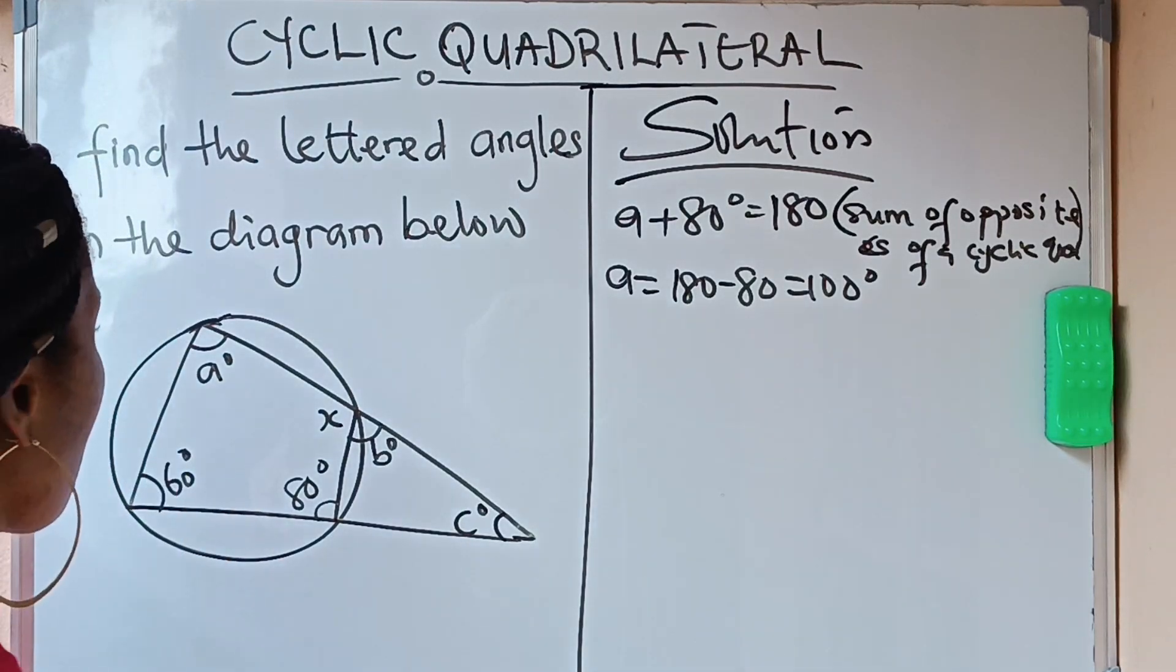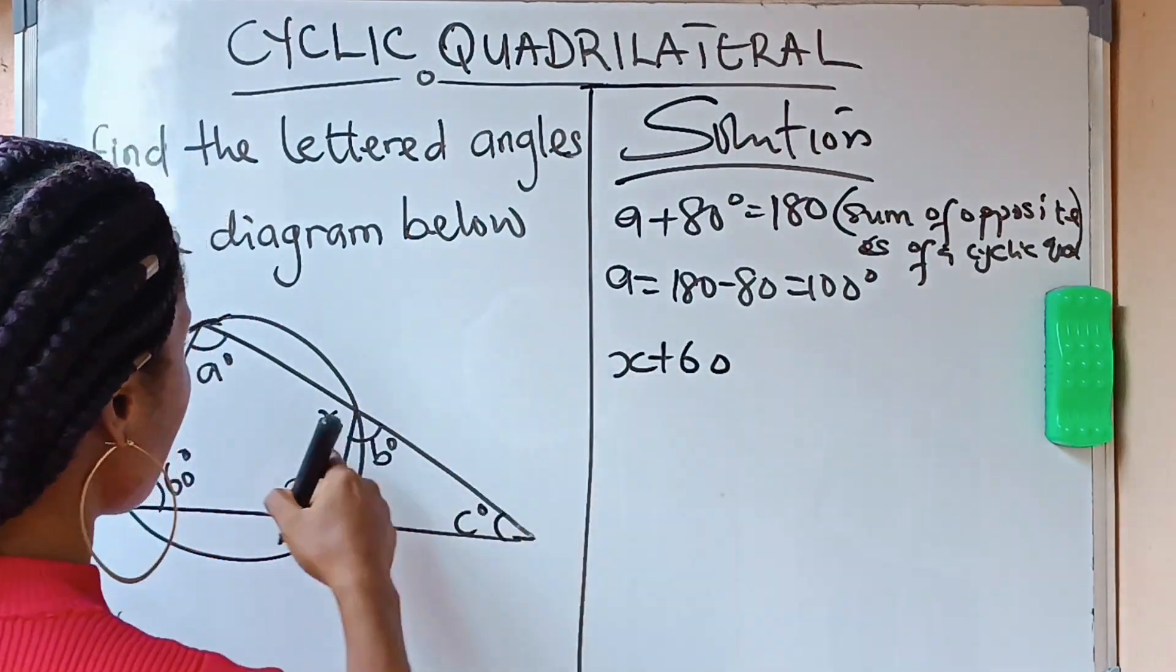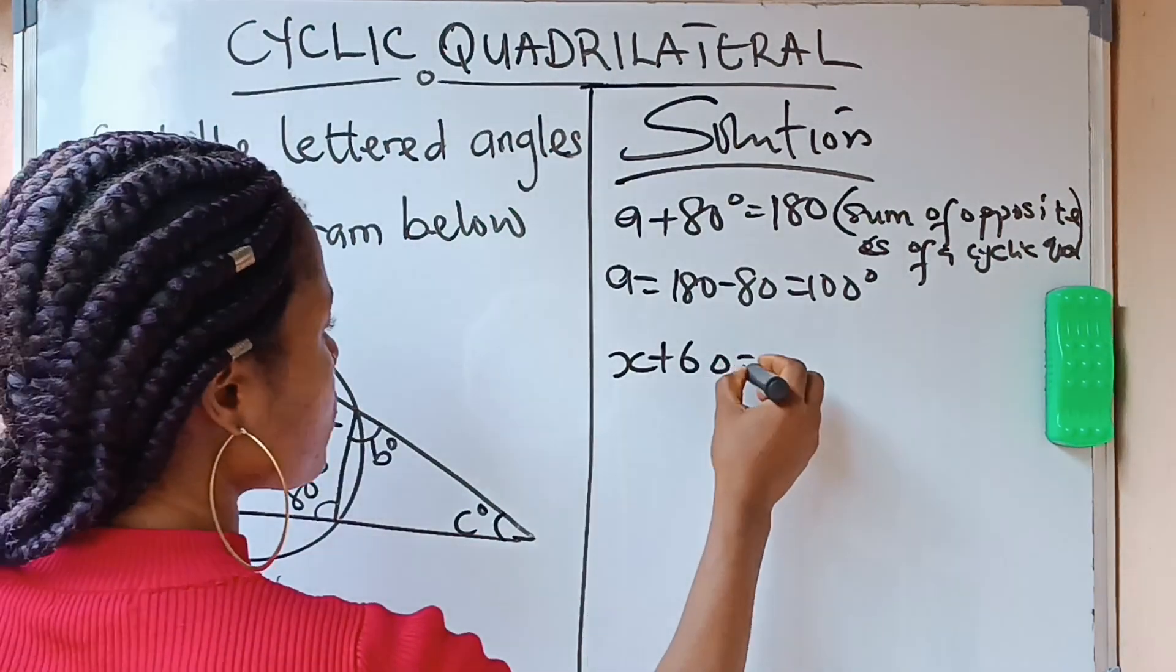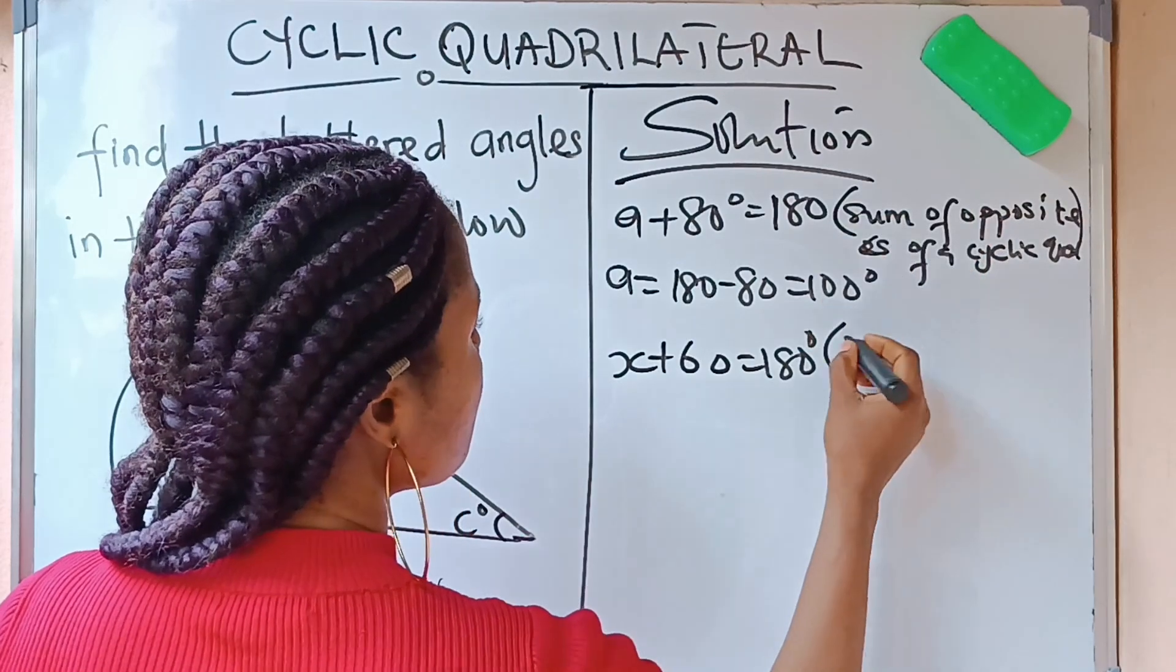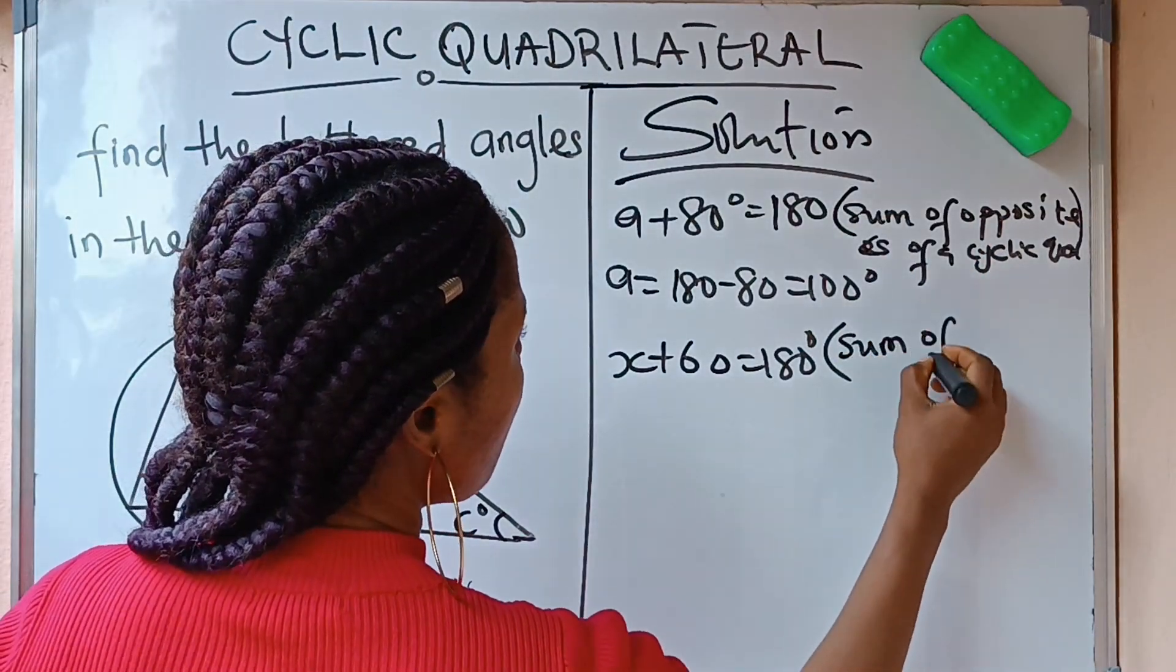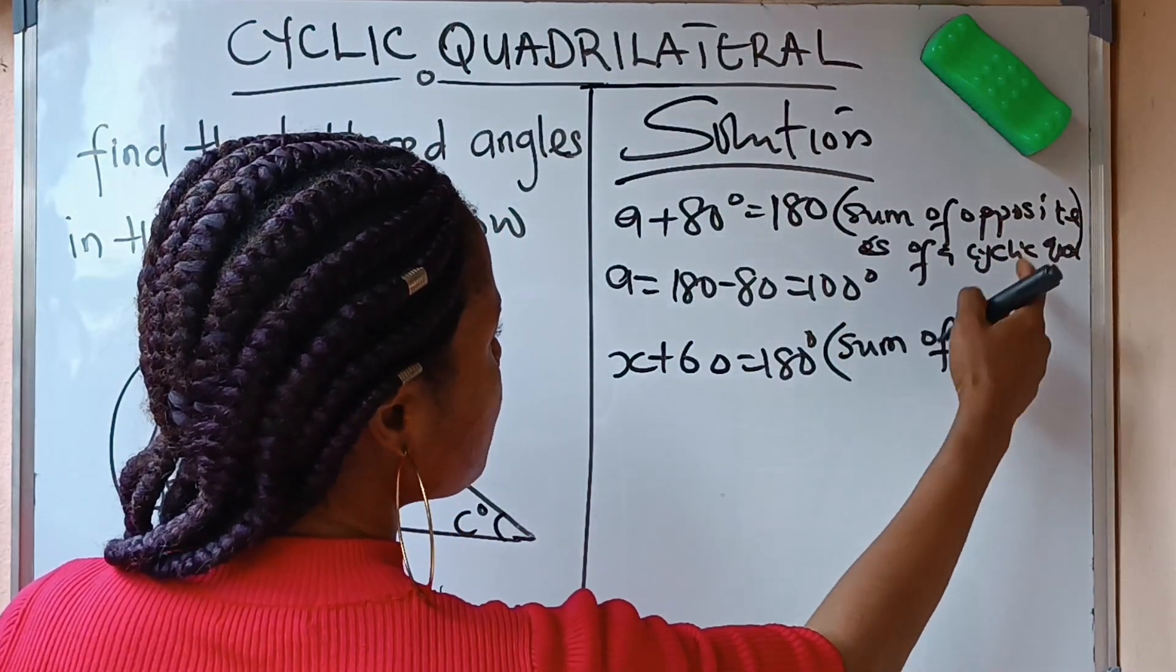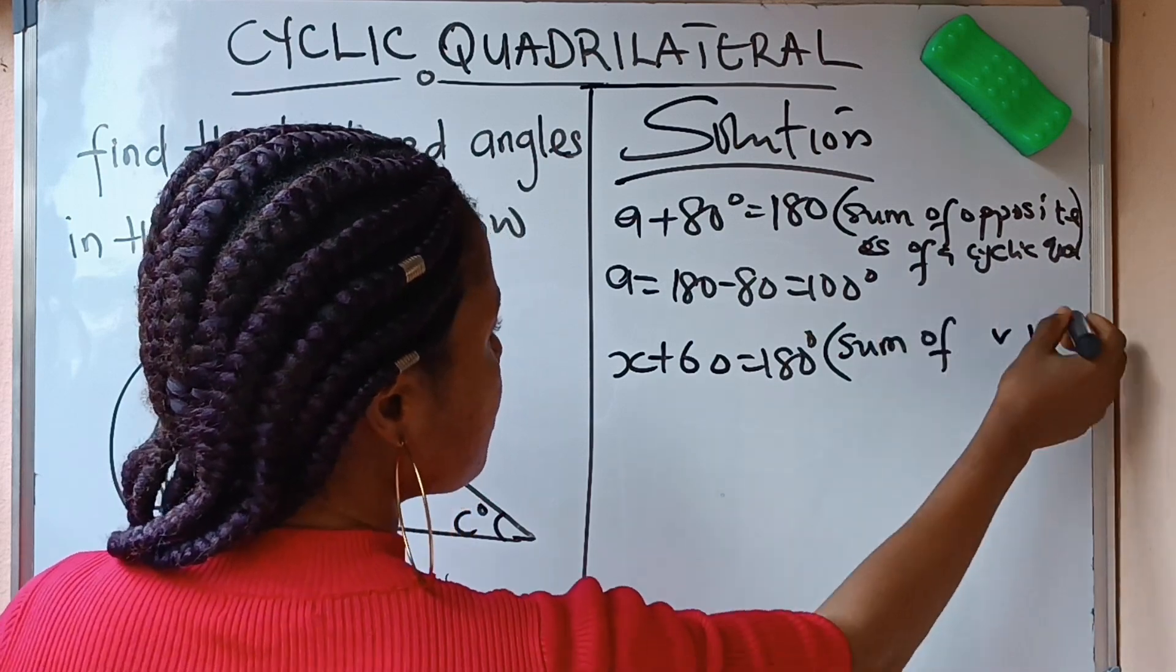So let's do the same. X plus 60, this X plus this 60, it's supposed to give us 180 degrees, right? The reason being the same thing. Sum of opposite angles of a cyclic quad.